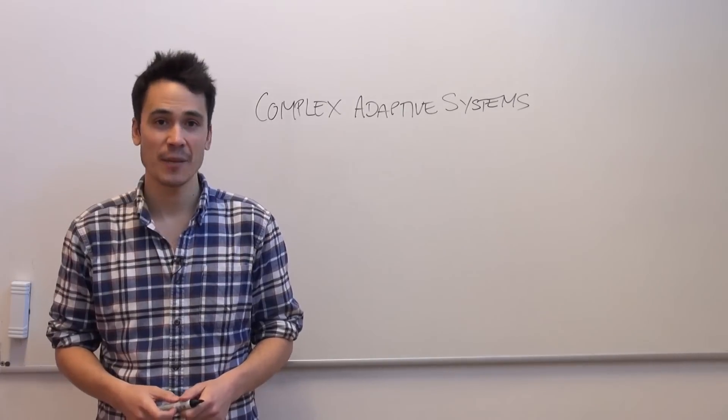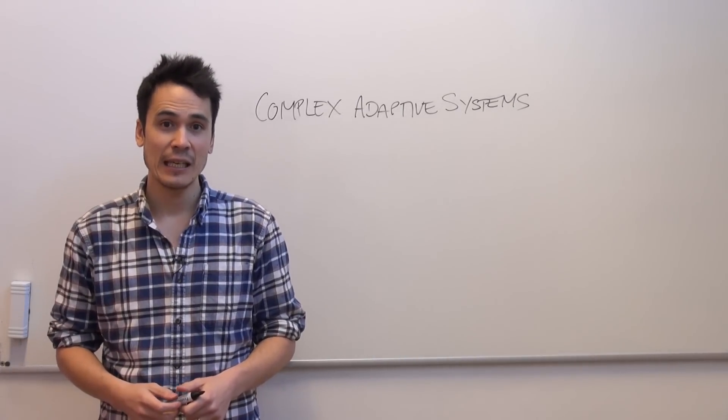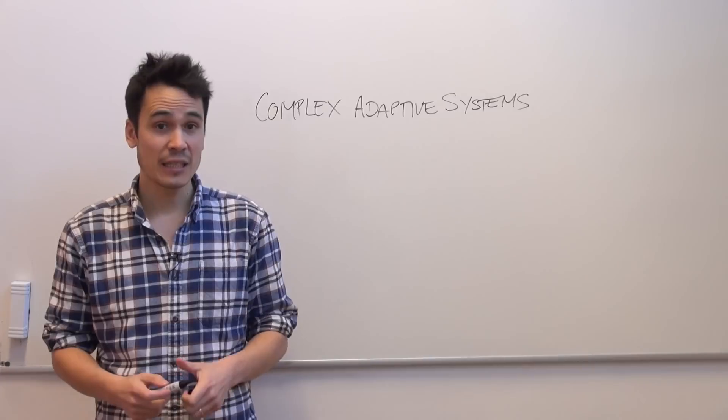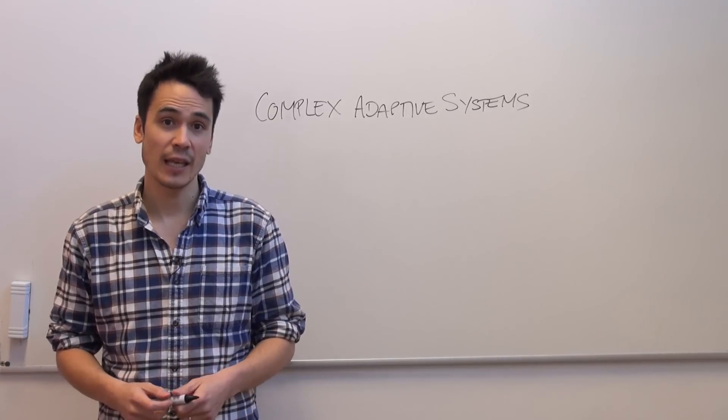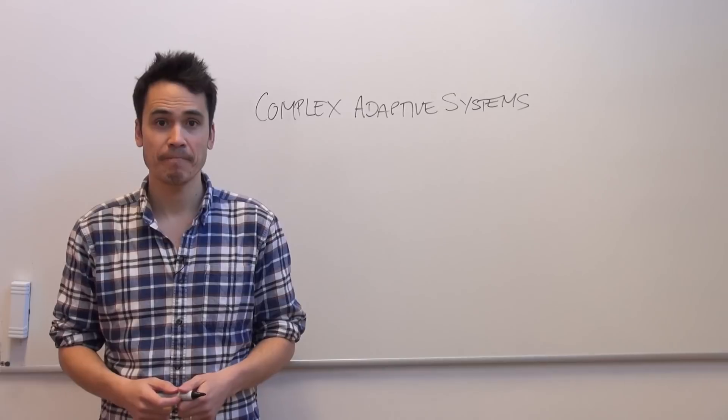Hello, my name is James Watson and I'm a researcher at the Stockholm Resilience Centre. I study complex adaptive systems. Now these systems are all around us. They include the financial systems, the human immune system and ecosystems.